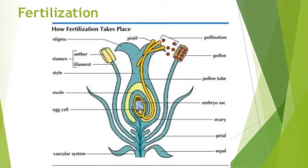First of all, see this diagram. Fertilization is the next step after pollination — it takes place when pollination is completed. Pollination means the transfer of pollen grains from the anther to the stigma. This was the simple definition of pollination from our previous lecture.